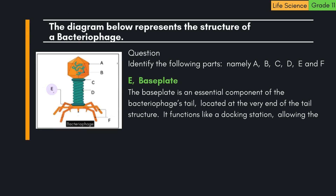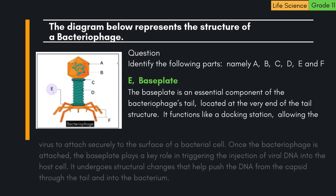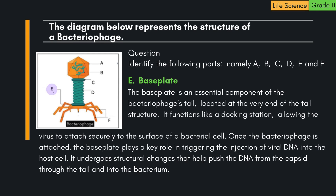E is the Baseplate. The baseplate is an essential component of the bacteriophage's tail, located at the very end of the tail structure. It functions like a docking station, allowing the virus to attach securely to the surface of a bacterial cell. Once the bacteriophage is attached, the baseplate plays a key role in triggering the injection of viral DNA into the host cell. It undergoes structural changes that help push the DNA from the capsid through the tail and into the bacterium.